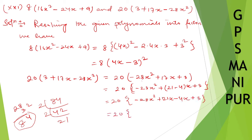From the first two terms minus 28x² plus 21x, I can take 7x common: 7x times minus 4x plus 3. And from minus 4x plus 3, taking out common gives the grouping.